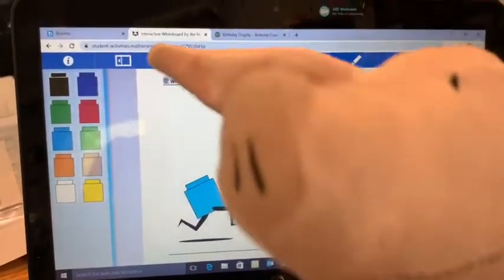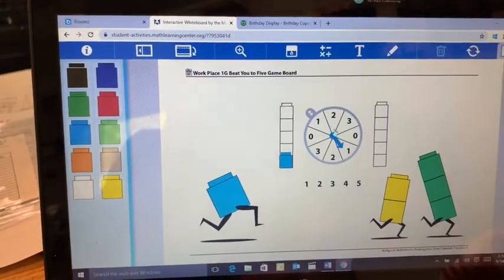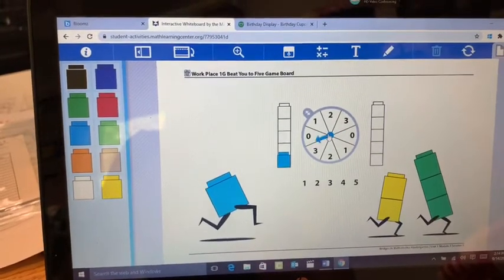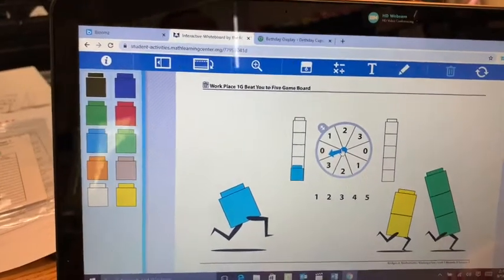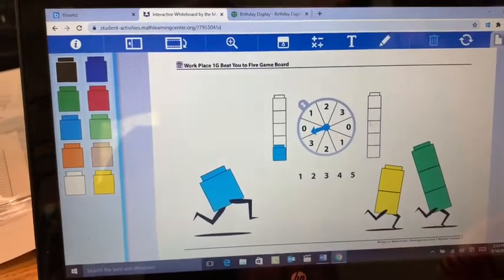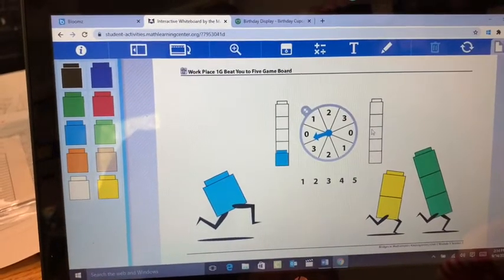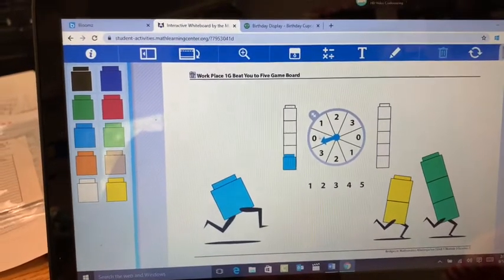All right, Olivia's turn. Hello everybody. All right, she's going to click the spinner. Zero. She doesn't get any, but that's okay. Zero and five makes five. Okay, my turn.